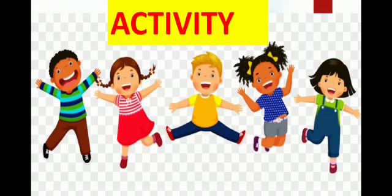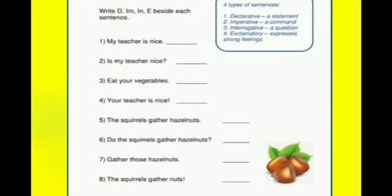Now, children, it's time for an activity. You all have to do this activity in your rough copy. Read the following sentences and identify their kinds. If the sentence is declarative, write D. If it is imperative, write IM. If it is interrogative, write IN. And if the sentence is exclamatory, write E.